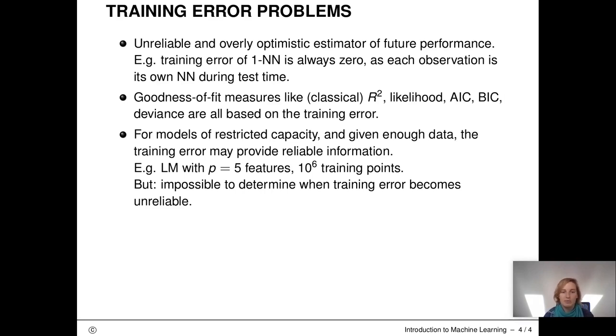In statistics, we use training error all the time. Goodness of fit measures like the classical R-squared, likelihood, AIC, BIC, deviance are all usually based on the training error. They don't necessarily have to be, but it's what we do.